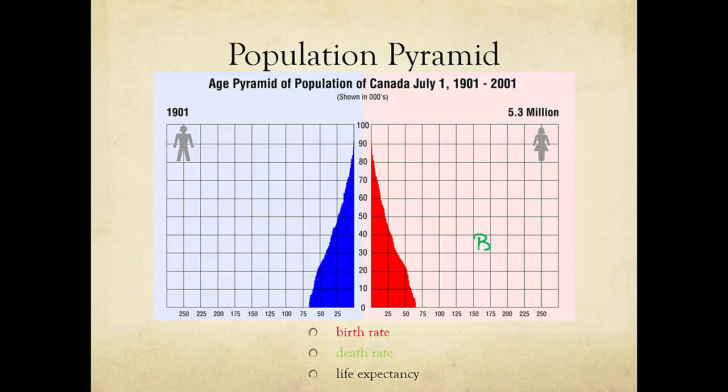As a practice, let's look at a pyramid with a wide base. Here's a pyramid representing Canada's population in 1901. The wide base indicates a high birth rate.